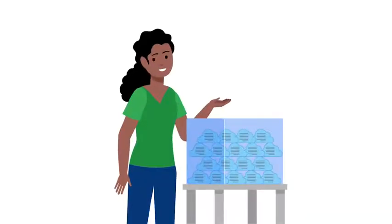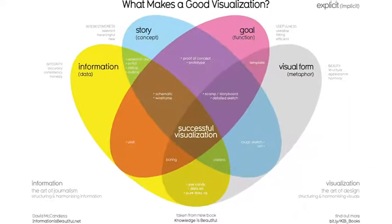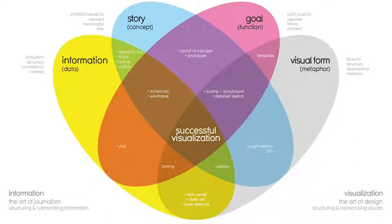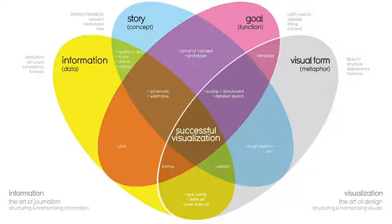Identifying the key elements of your findings helps set the stage for how you should organize your presentation. Check out this data visualization made by David McCandless, a well-known data journalist. This graphic includes four key elements: the information or data, the story, the goal, and the visual form. It's arranged in a four-part Venn diagram, which tells us that all four elements are needed for a successful visualization.